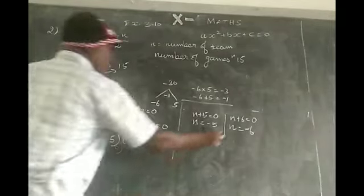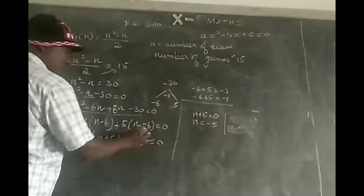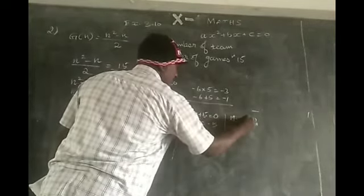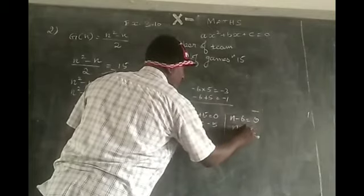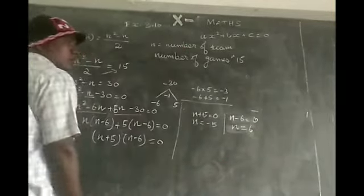And n minus 6 is equal to 0. n is equal to 6.